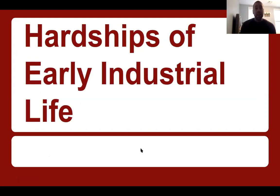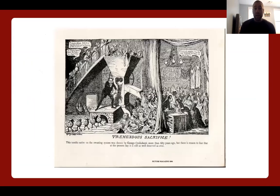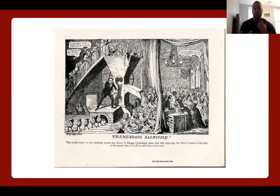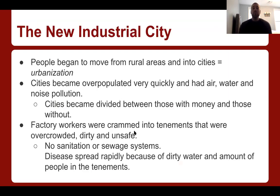The hardships of early industrial life are many. Factory conditions are horrible. As you can see in this political cartoon, there appears to be a factory owner making goods, but there are many people just going right into this processor and being spit out — the title is 'The Tremendous Sacrifice.' It shows the horrendous atrocities that were done to make goods faster and in bulk. People begin to move from rural areas like farms into cities — this is called urbanization. Cities become overpopulated very quickly because people are flooding to the cities in search of jobs, and there are tons of jobs at factories.